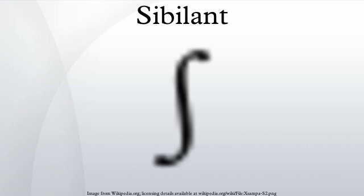Sibilance is a manner of articulation of fricative and affricate consonants, made by directing a stream of air with the tongue towards the sharp edge of the teeth, which are held close together. A consonant that uses sibilance may be called a sibilant or a strident.